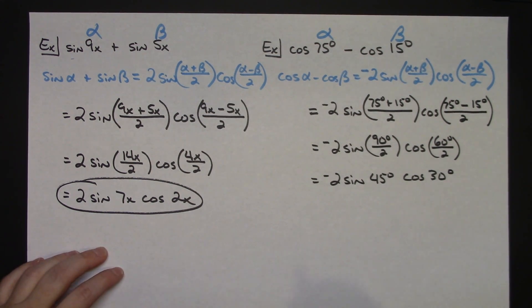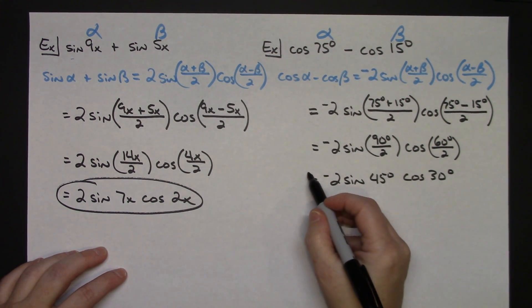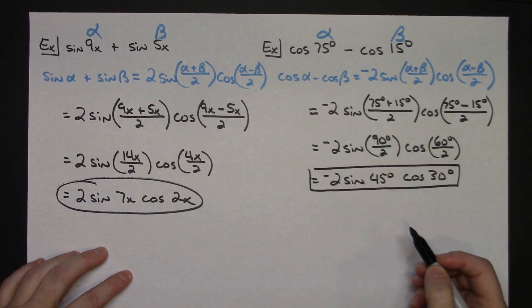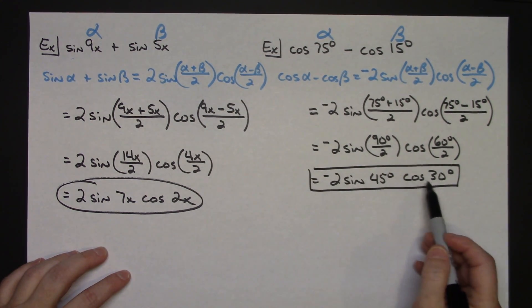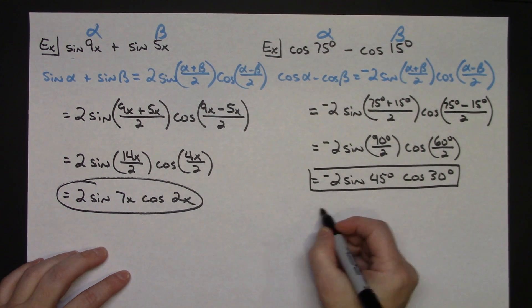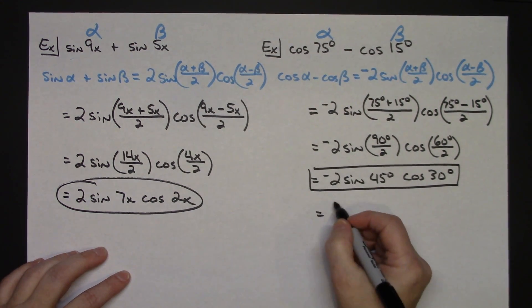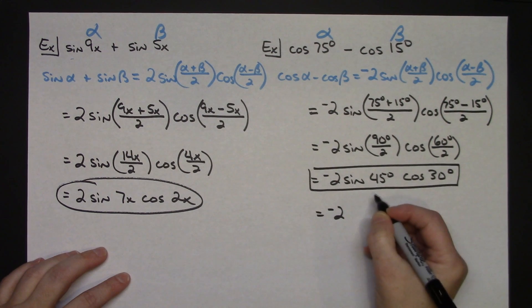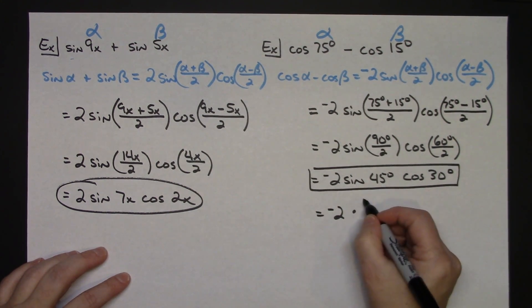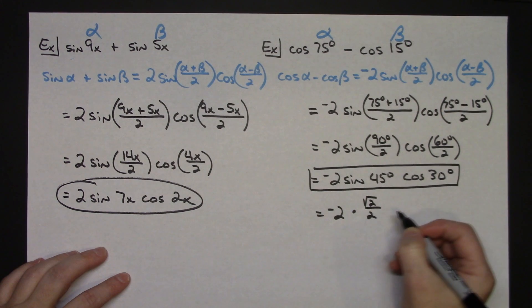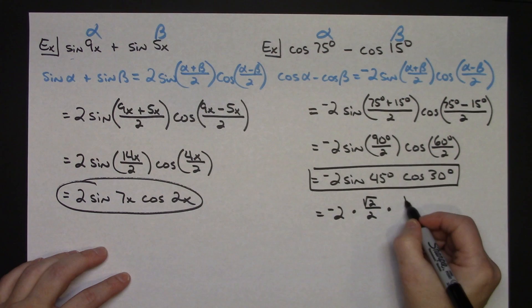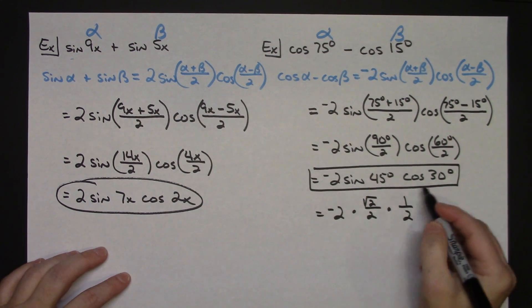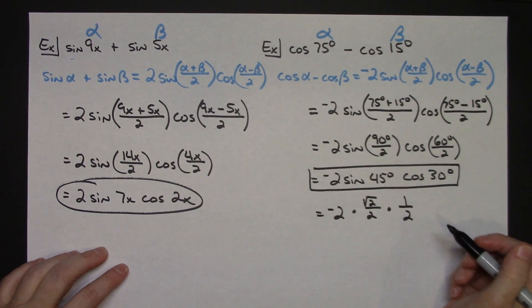Now depending on what the directions say you might only have to go that far and stop. However if they want an exact value for that product, both those values are on your unit circle. So you can use your unit circle and get those values off. So let's go one more for an exact answer here. Negative 2 sine of 45 degrees is going to be square root of 2 over 2. It's positive, it's in the first quadrant. Cosine of 30 degrees in the first quadrant it's going to be positive, it'll be 1 half. Those values should be coming directly off your unit circle.